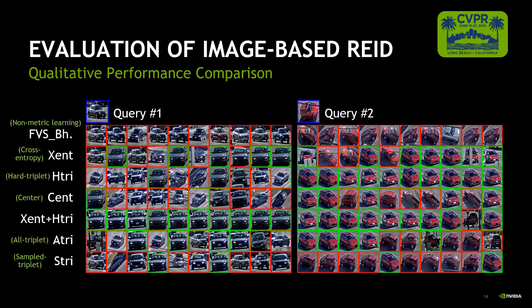This can be further visualized in a qualitative performance comparison. For two of the queries, the top ten matches found by each method are shown. In these examples, the combinations of cross-entropy loss and hard triplet loss can recover vehicle identities most effectively.